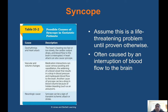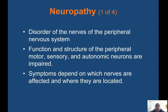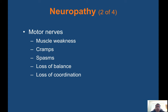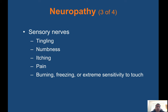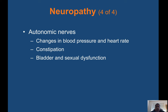Syncope: assume this is a life-threatening problem until proven otherwise, often caused by an interruption of blood flow to the brain. Possible causes include dysrhythmia, heart attack, vascular and volume changes, and neurologic causes. Neuropathy is a disorder of the nerves of the peripheral nervous system in which function and structure of peripheral motor, sensory, and autonomic neurons are impaired. Symptoms depend on which nerves are affected. Motor nerve symptoms: muscle weakness, cramps, spasms, loss of balance and coordination. Sensory nerve symptoms: tingling, numbness, itching, pain, burning, freezing, or extreme sensitivity to touch. Autonomic nerve symptoms: changes in blood pressure and heart rate, constipation, and bladder and sexual dysfunction.